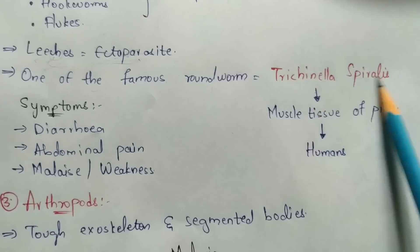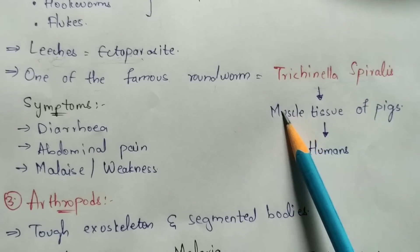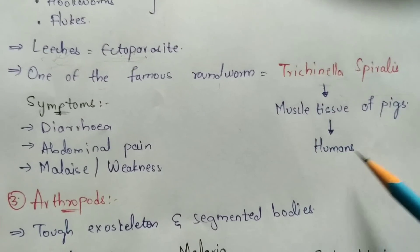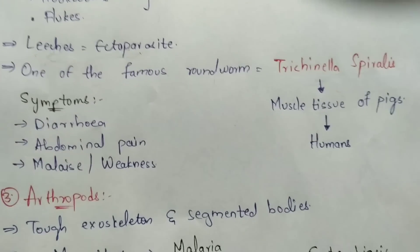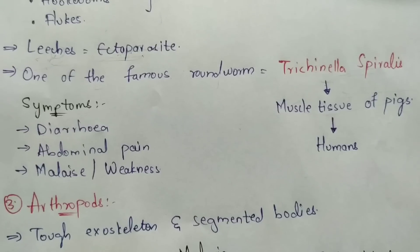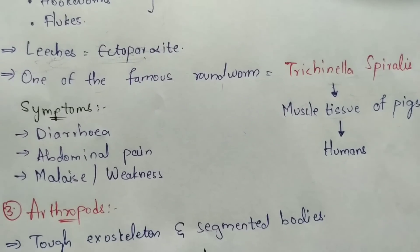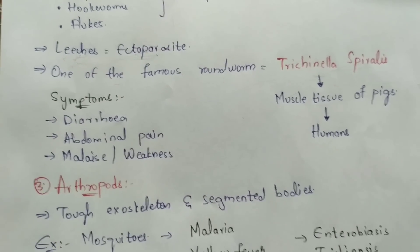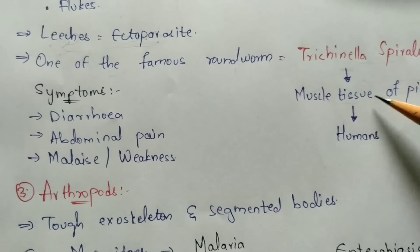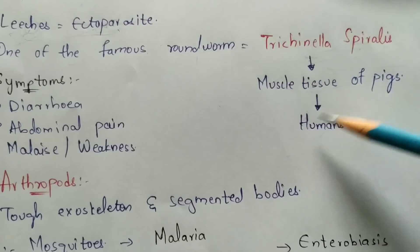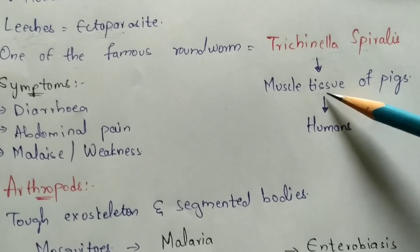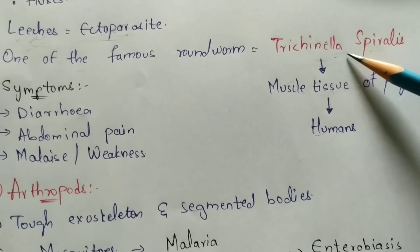One famous roundworm is Trichinella spiralis, a parasite normally found in the muscle tissue of pigs. It enters humans either through the fecal-oral route via mosquitoes acting as vectors, transmitting eggs into contaminated food and water, or directly when humans consume contaminated pork. If pork is not properly cooked and is contaminated, humans can become infected with this parasite.